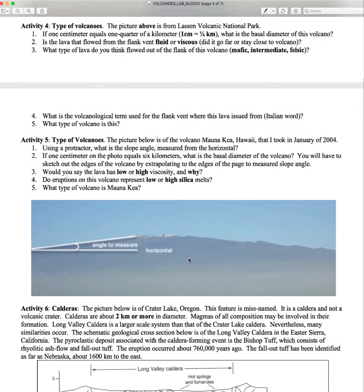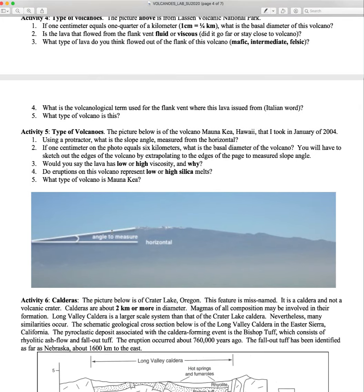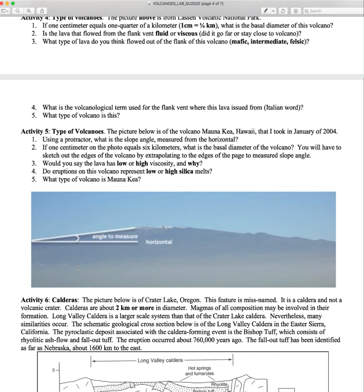Here's a picture of Mauna Kea in Hawaii. You're doing the same slope angle measurement. For the basal diameter, one centimeter is six kilometers. Here I say you might want to extrapolate — you can see the volcano doesn't quite go to the base; it really goes off the page. So you might want to extrapolate a little bit off the page to try to get a more reasonable estimate of its basal diameter.